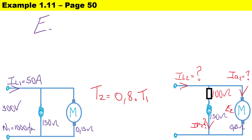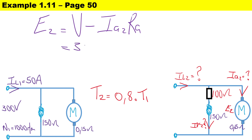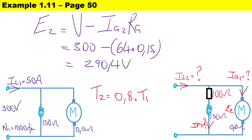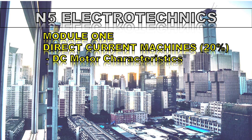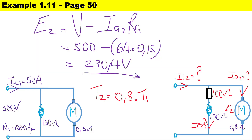Now that we have the secondary armature current, we can calculate the secondary EMF: E2 equals V minus I_a2 times R_a, which is 300 minus 64 times 0.15, giving E2 equals 290.4 volts. With all field currents and EMF values known, we can now calculate the new speed N2 using: N2 equals E2 times N1 times I_field1 divided by E1 times I_field2.